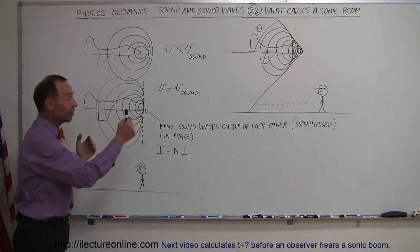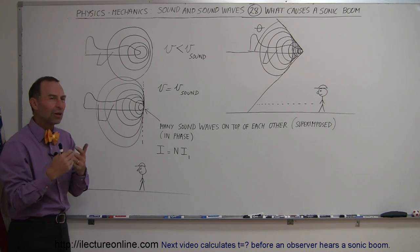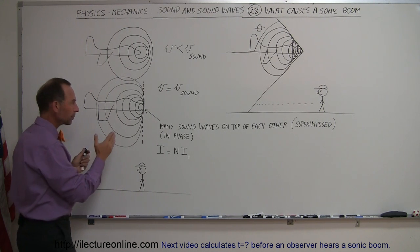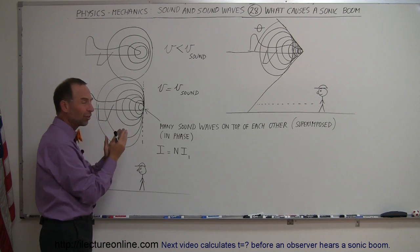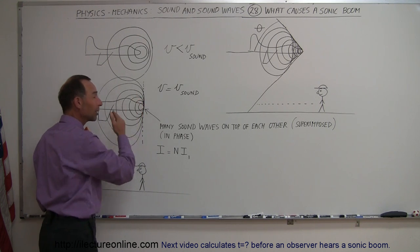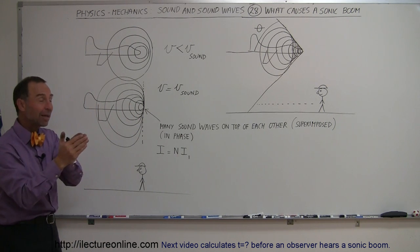Well, the plane makes a sound wave, sound wave travels out, plane makes another sound wave, travels out and again that's of course due to the vibration of the engines of the plane and anything on the plane that's making noise. And you can see that when the plane moves at the same speed as the sound, then the next wave will be produced exactly the same location where the previous wave is.